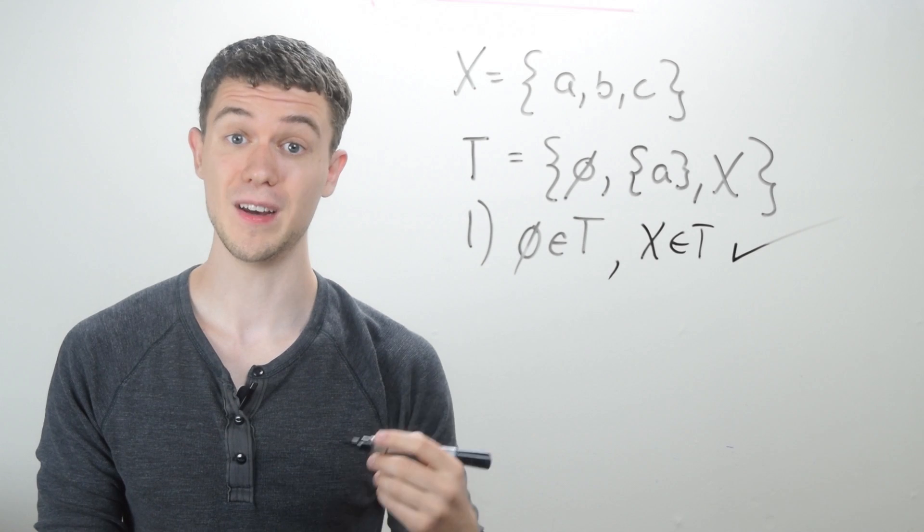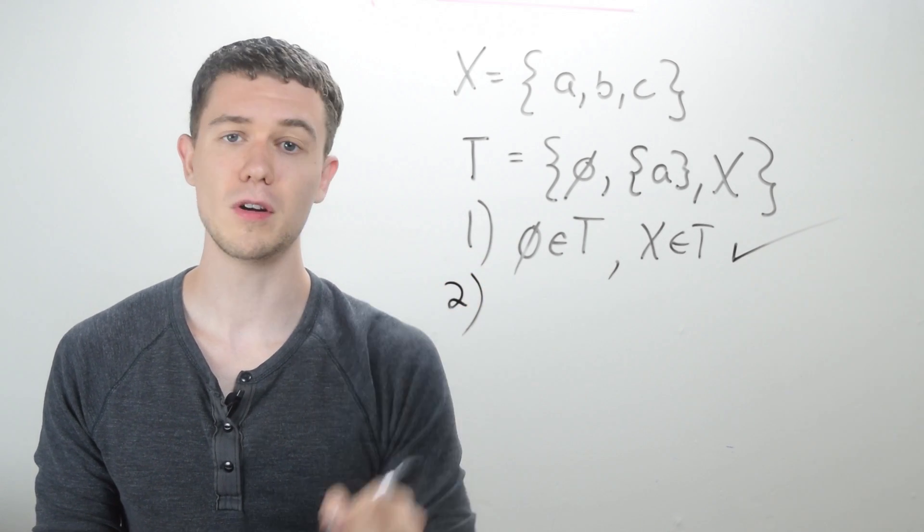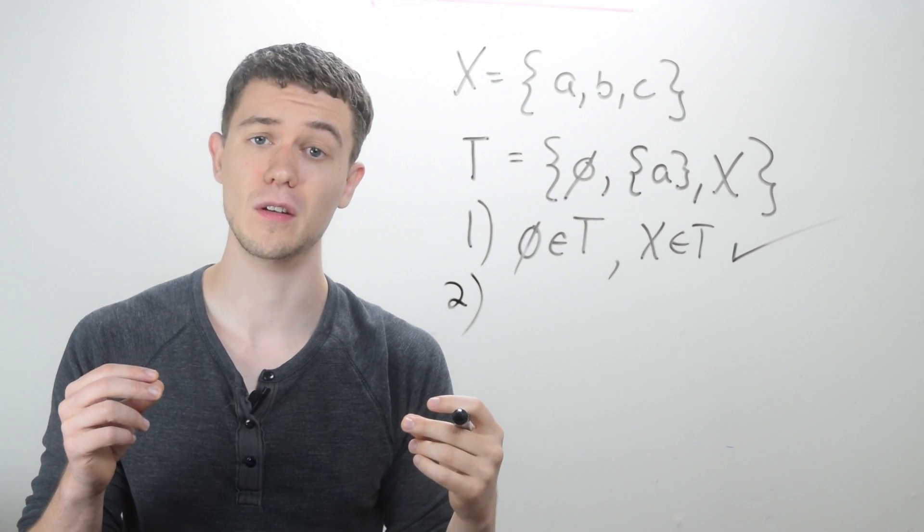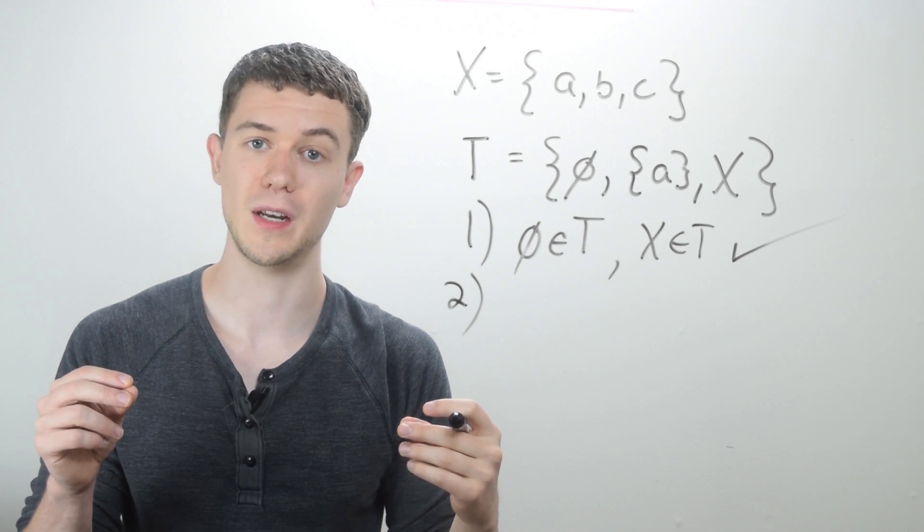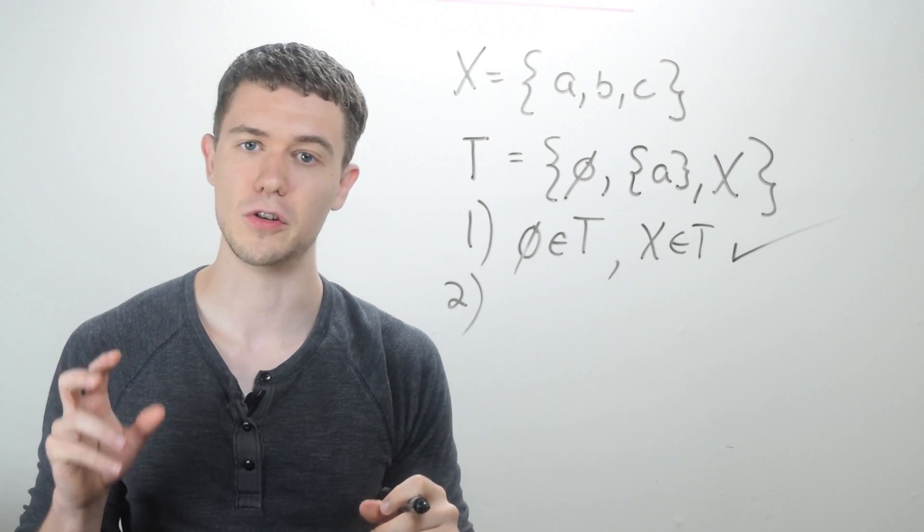So that means, okay, good, satisfied criterion number one. What's the second criterion? Well, if I take any intersection of two elements in my topology, that also has to be an element of the topology.